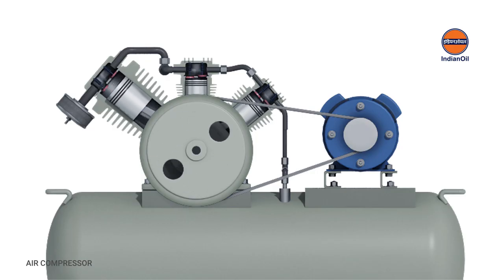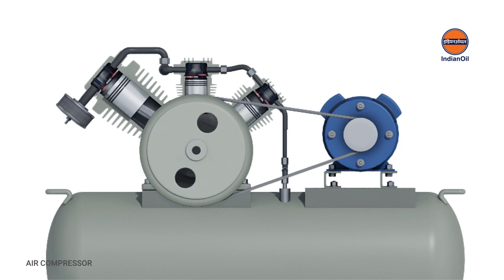These air compressors use this principle by pumping air into an air chamber through the use of the constant motion of pistons. They use one-way valves to guide air into and out of a chamber, whose base consists of a moving piston. When the piston is on its downstroke, it draws air into the chamber. When it is on its upstroke, the charge of air is forced out and into a storage tank.